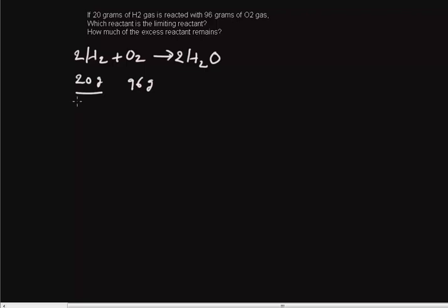You have to divide the given grams by the molar mass. So the molar mass of H2, or the mass of 1 mole of H2, is 2.02 grams per mole. And O2 molar mass is 32 grams per mole.